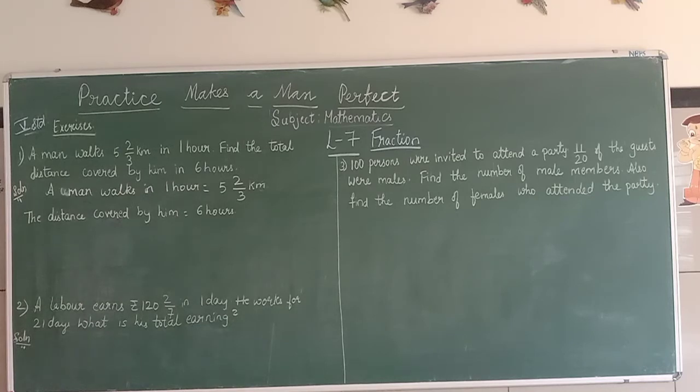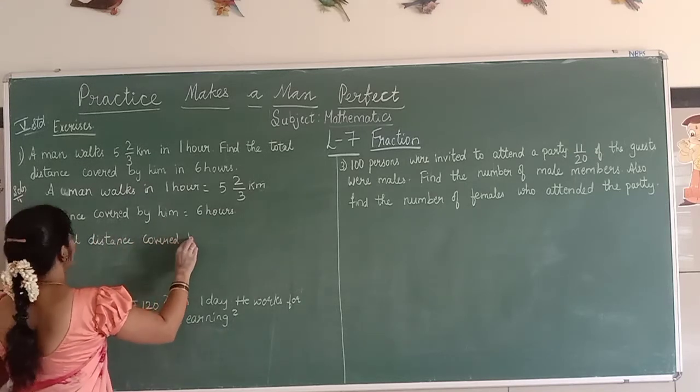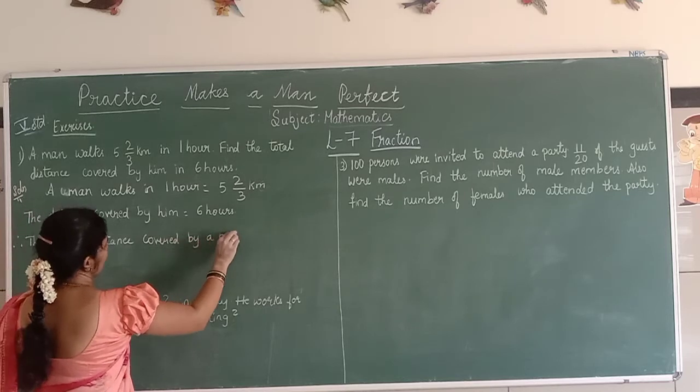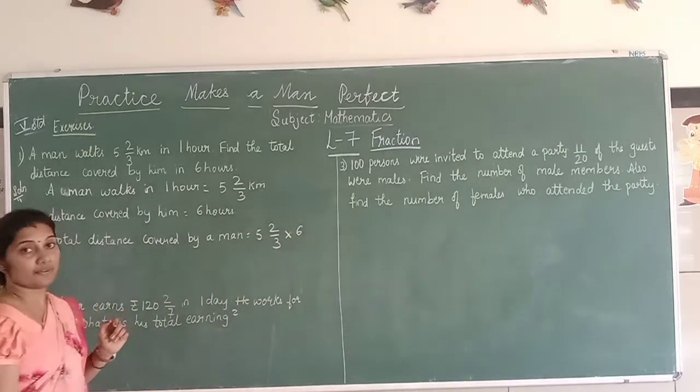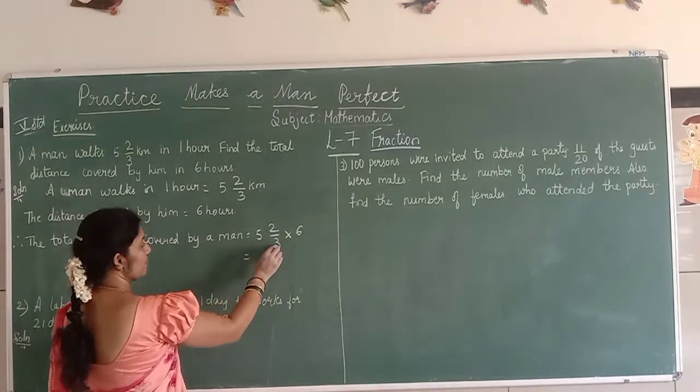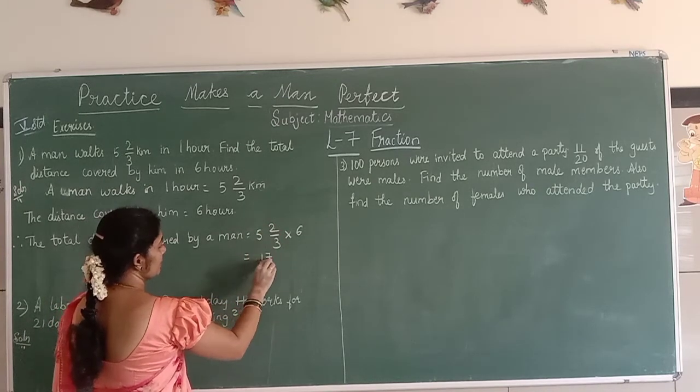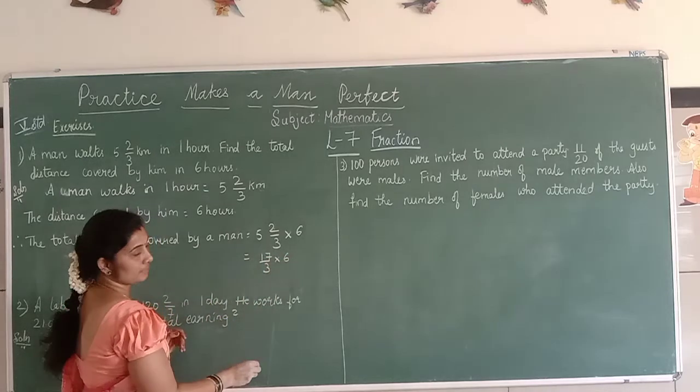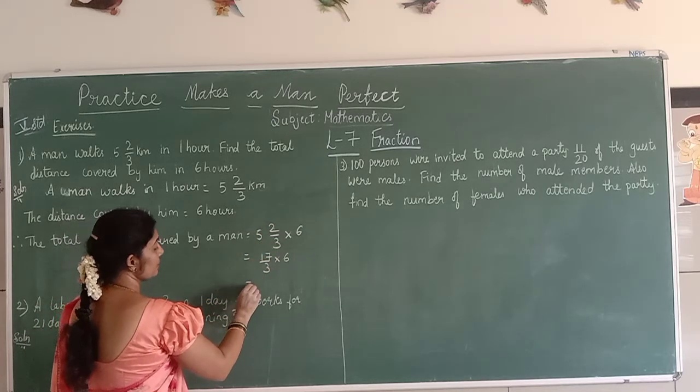Therefore, the total distance covered by the man will be 5 2/3 into 6 for 6 hours. First I convert the mixed fraction: 3 times 5 plus 2 equals 17, so 17/3 into 6. We can cancel 3 from denominator.